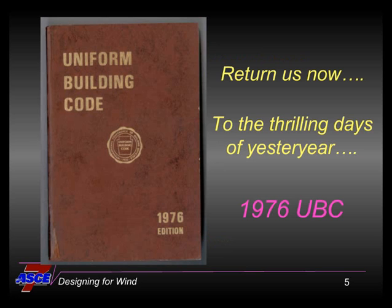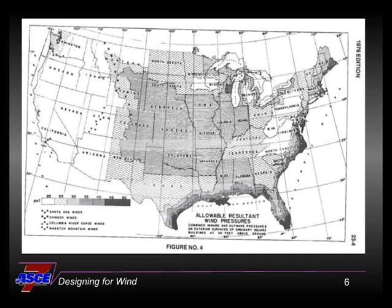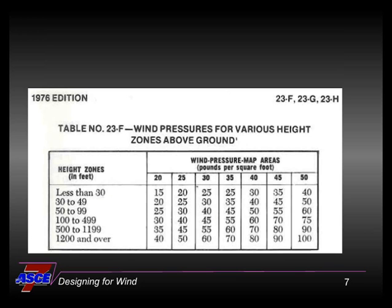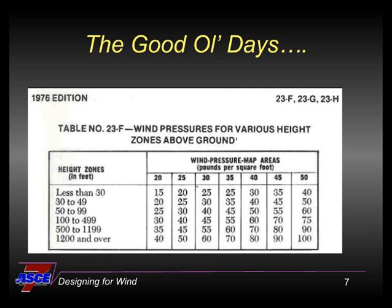When I started practice, I used the 1976 UBC, which actually was a much simpler approach to the design of buildings for wind loads than what we have today. There was a wind map and then there was a table, and you actually pulled your wind pressures right out of a table depending on the particular wind velocity in your area of the country. So what we're trying to do here is return to the good old days and develop something you can use as a simple design aid without having to develop your own spreadsheet or go through all the equations that are part of the wind standard.